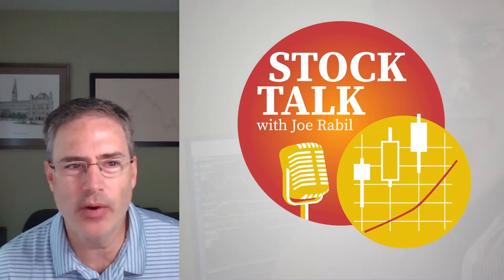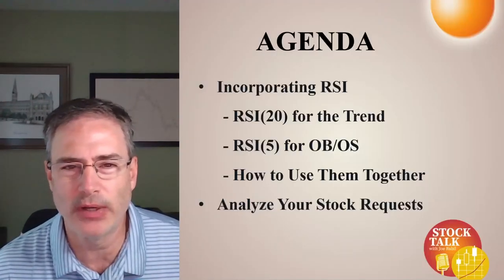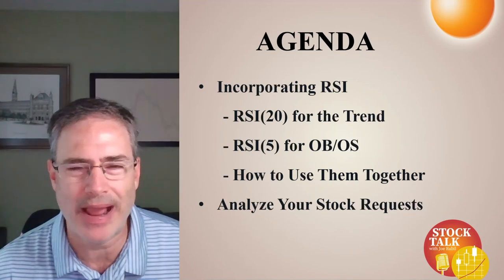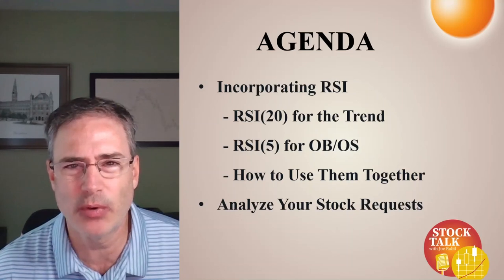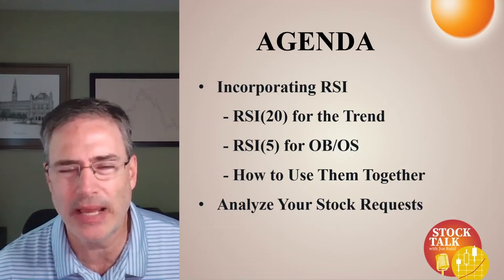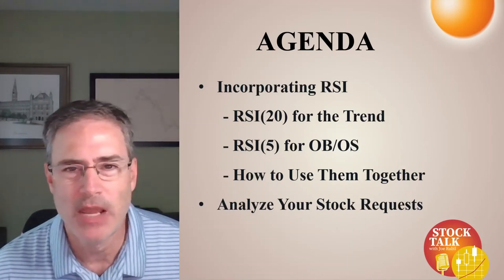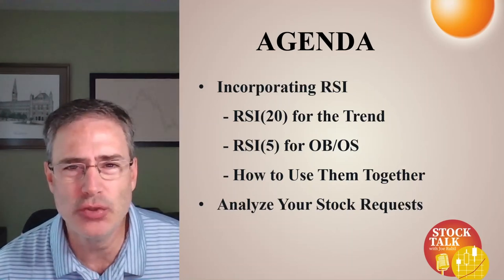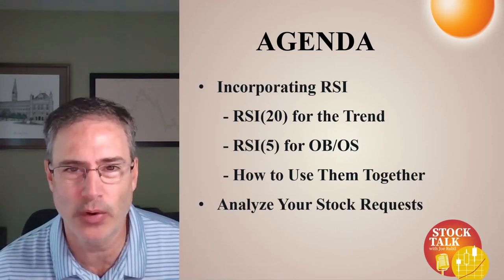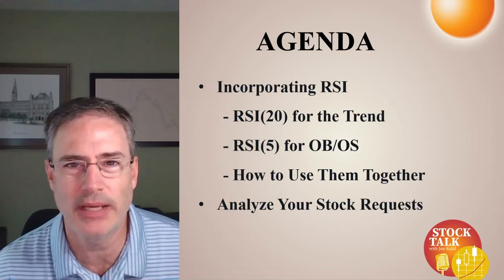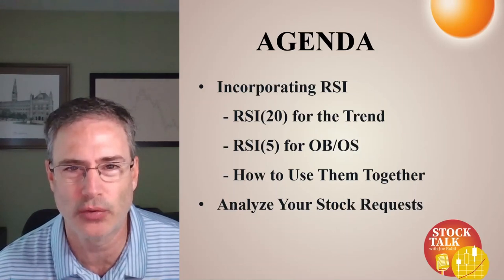I'm going to talk about how I would incorporate RSI, not necessarily as a standalone system — you could do it that way, but I wouldn't recommend it. I use two different RSIs: a 20 RSI and a 5. The 20 is for the trend, and the 5 is for the overbought and oversold. I'll show you how I use them together.